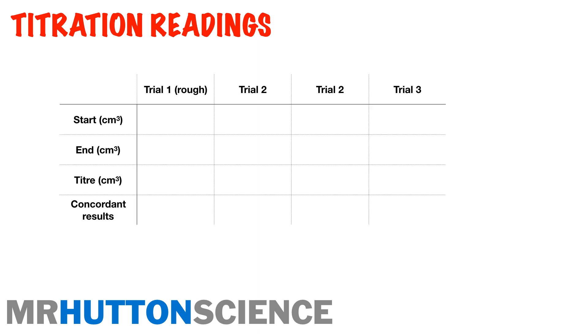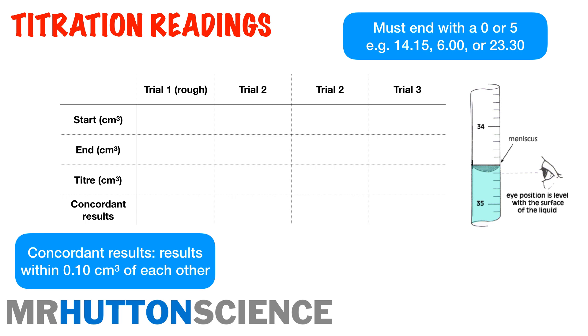When doing a titration you need a table for your results. There's a rough trial to start with, then second, third, and fourth readings. You record your start volume, your end volume at the endpoint, then calculate how much you've used. Your readings must end with a zero or a five — they'll almost certainly be to two decimal places. For example: 14.15, 6.00, or 23.30.